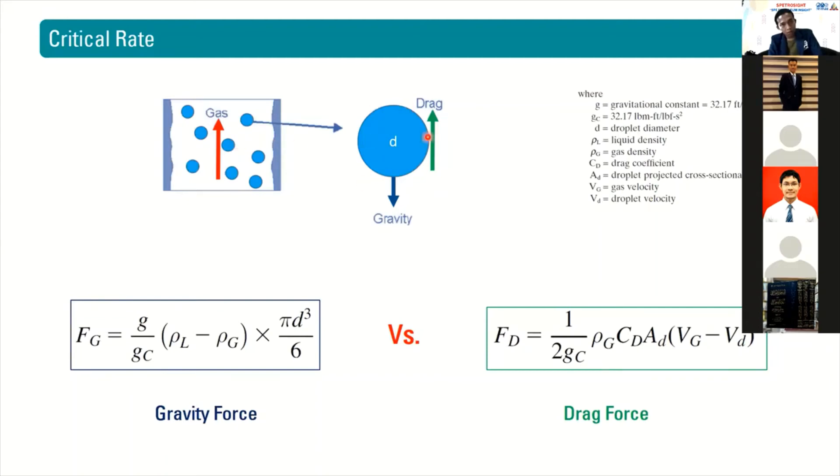These are the liquid droplets. They will move by drag force to the top, but they will be dragged down by gravity. So it comes down to the balance between the gravity force and the drag force.